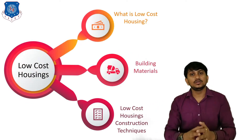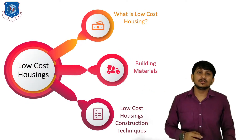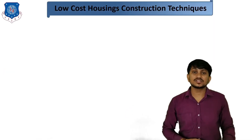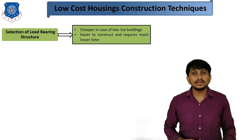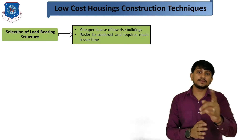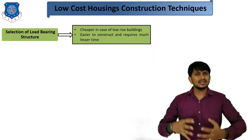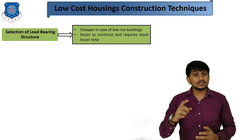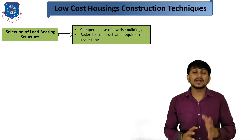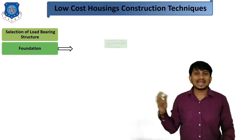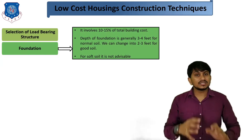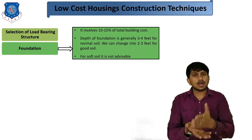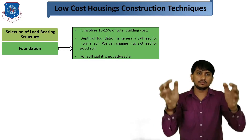Now let us understand how you can construct low-cost housing. These are the various construction techniques used. First technique is selection of load-bearing structures instead of frame structures, because the cost of a load-bearing structure is comparatively less than a frame structure. It is also easier to construct and requires much lesser time. Second technique relates to foundation, because foundation involves 10 to 15% of total building cost.